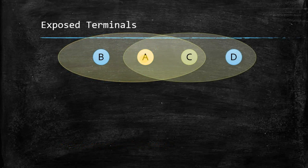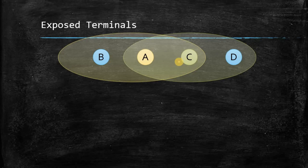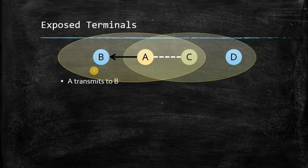Similar to the hidden station problem, another problem is the exposed station problem. Consider a scenario where B is in range of A, and A is in range of C, so B is connected to A as well as C. A and C are in the network range of each other, and C and D are in the range of each other.